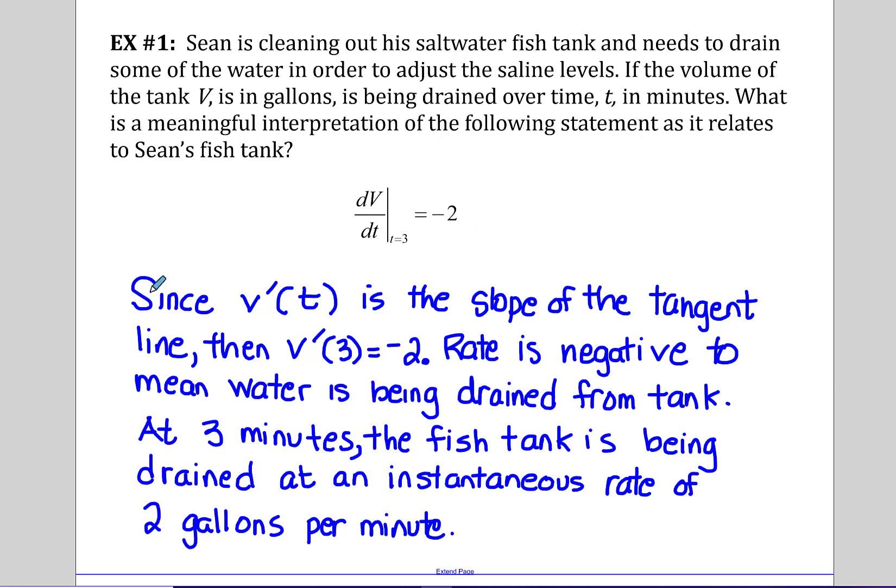So I said that along these lines, since v prime of t is the slope of the tangent line, then the derivative at three equals negative two has a meaning that the rate is negative. So to me that says that the water's being drained out of the tank, and it's being drained out of the tank at three minutes. So we can say in a complete sentence - this is my thinking up here - we can say the interpretation of this statement, this symbolic statement, is at three minutes the fish tank is being drained at an instantaneous rate of two gallons per minute.